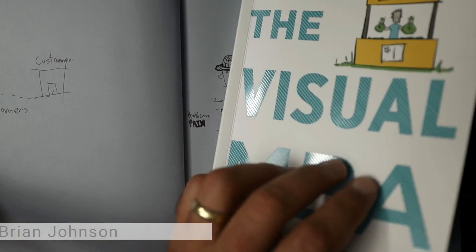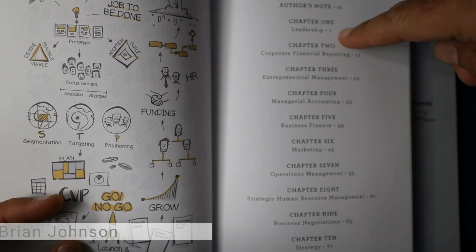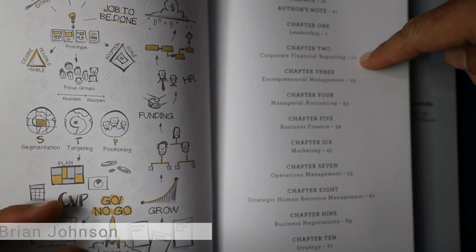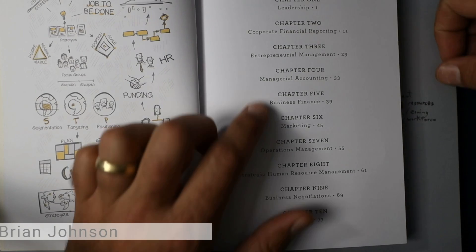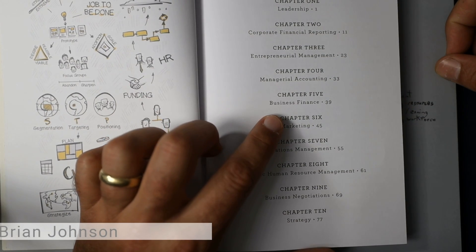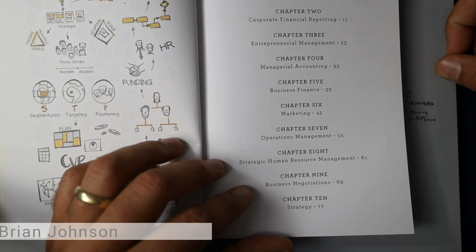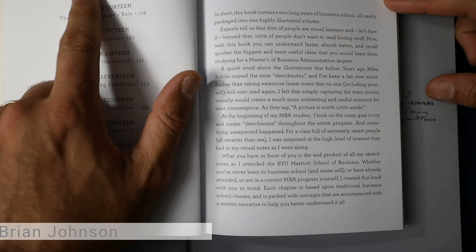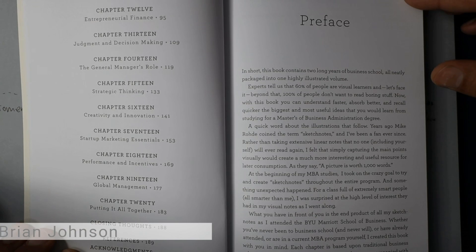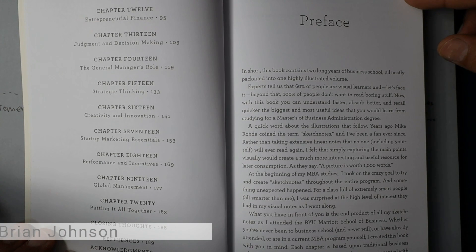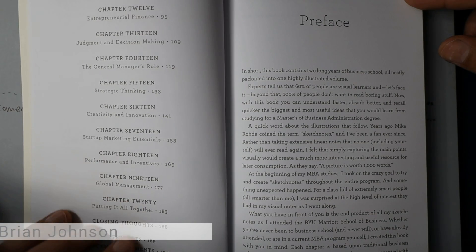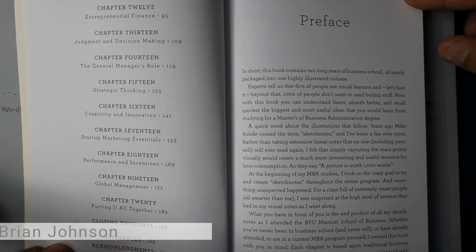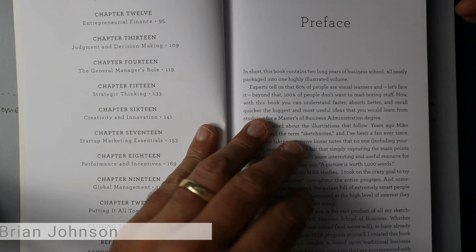I'll look at the chapters here. So everything from leadership, corporate financial reporting, entrepreneurial management, managerial accounting, business finance, marketing, operations management, strategic human resource management, business negotiations, strategy, business ethics, entrepreneurial finance, judgment and decision making, general manager's role, strategic thinking, creativity and innovation, startup marketing essentials, performance and incentives, global management, putting it all together. And then some closing thoughts about it.